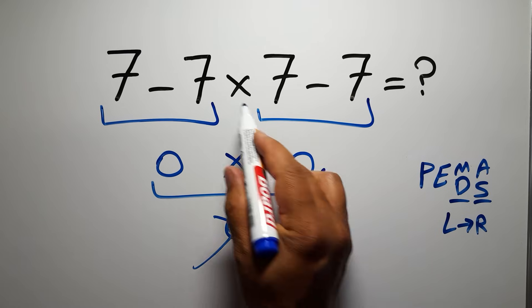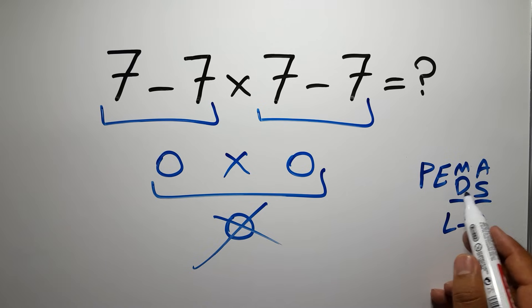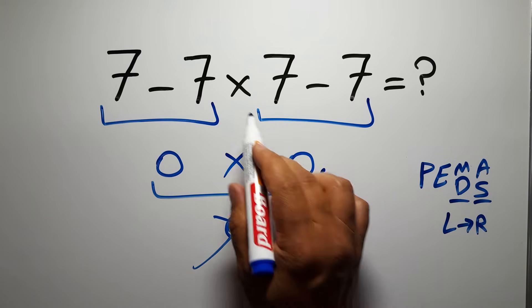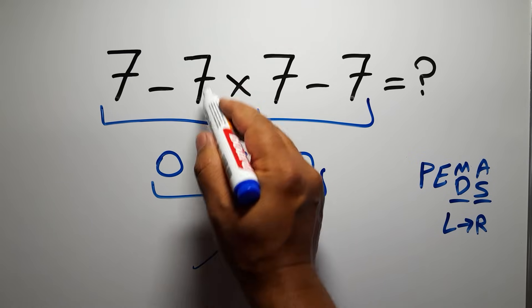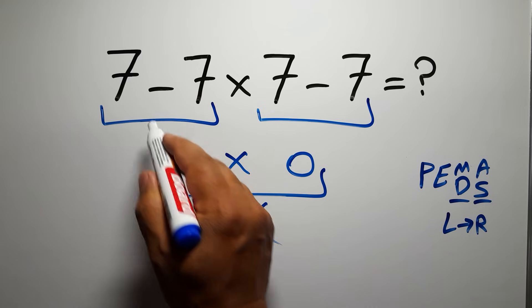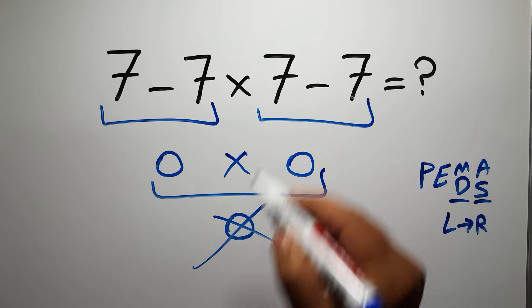Multiplication has higher priority than subtraction because in PEMDAS, multiplication comes before subtraction. So here first we have to do this multiplication, not this subtraction. So first this multiplication, then this subtraction, and finally this subtraction.